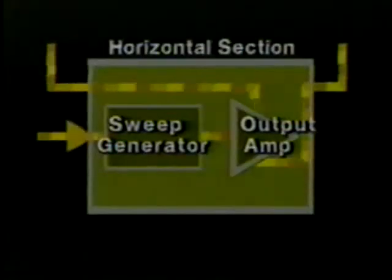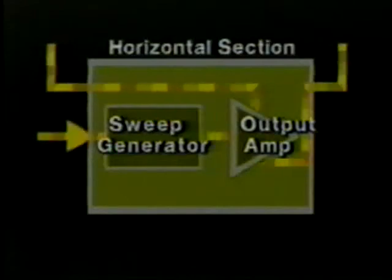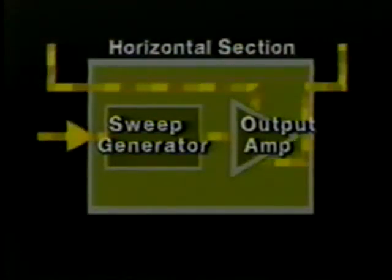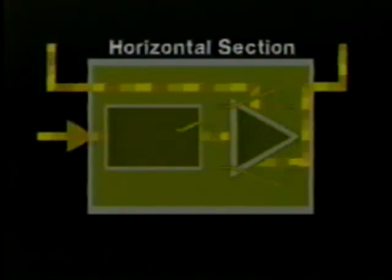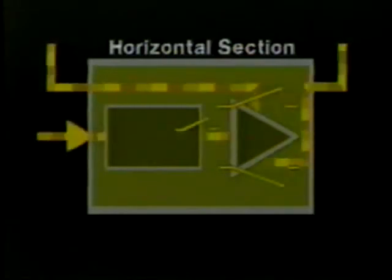The sawtooth signal produced by the sweep generator is fed to the next block in the system: the horizontal output amplifier. It amplifies the sawtooth signal to a level sufficient to deflect the beam horizontally across the entire face of the CRT.